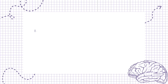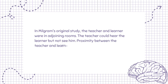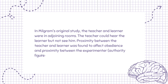Proximity. In Milgram's original study, the teacher and learner were in adjoining rooms. The teacher could hear the learner but not see him. Proximity between the teacher and learner was found to affect obedience, and proximity between the experimenter — the authority figure — and the teacher was also found to affect obedience.